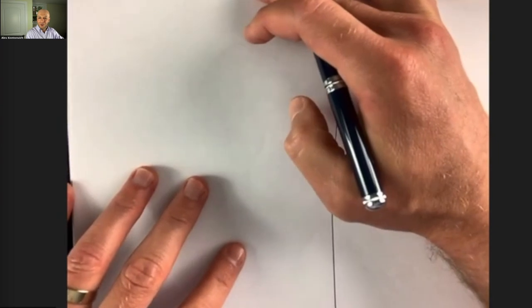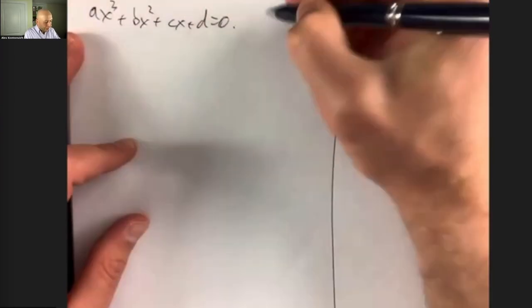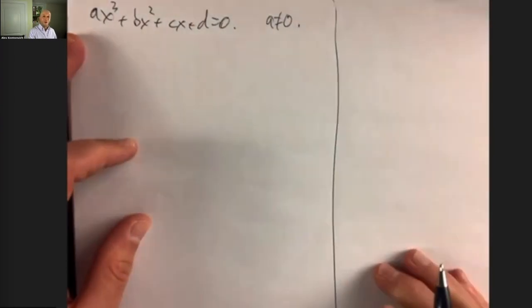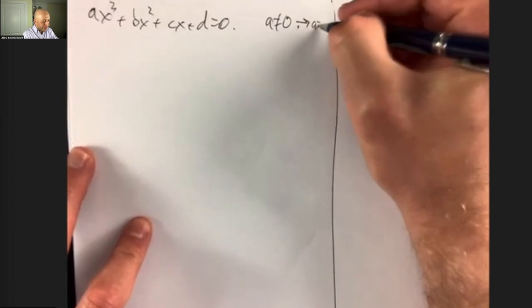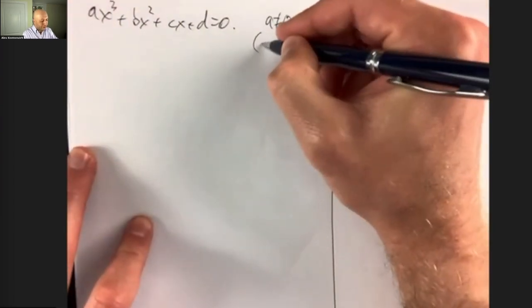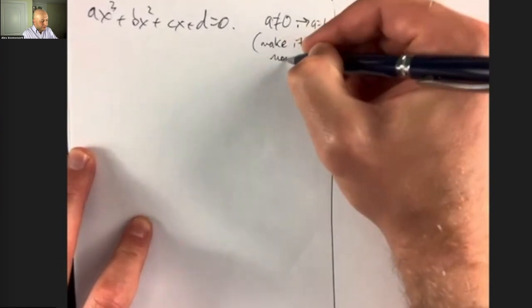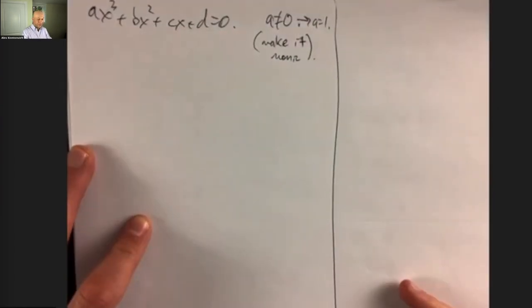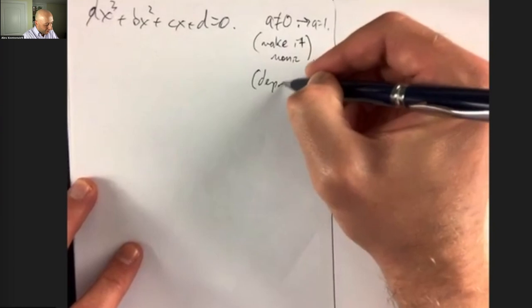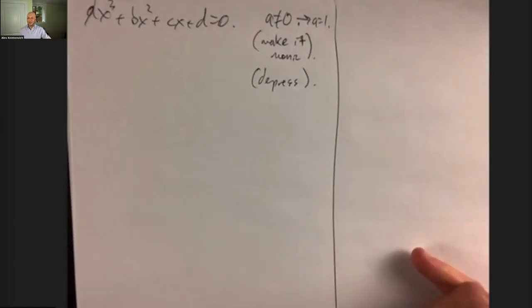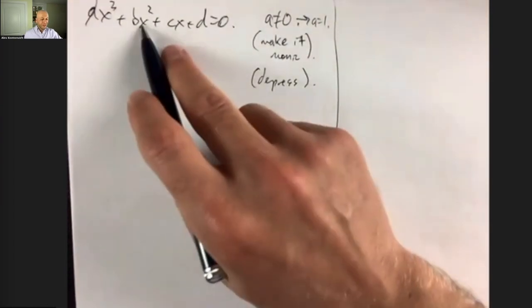Cubic equation: ax³ + bx² + cx + d = 0. If a is not zero, divide through by a — that's making the polynomial monic. The next step is to depress it: we want an equation with no x² term. We replace x by x minus lambda — specifically, x = y − b/3.